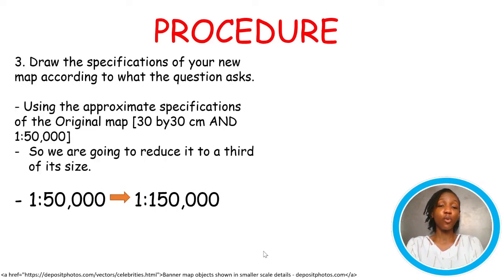So, continuing with the procedure for map reduction and enlargements. After we draw the specifications of our new map according to what the question asks, remembering the previous readings we got, 30 by 30 centimeters and 1 ratio 50,000. So, if we're asked to reduce it to a third of its size, as previously done before, we are going to get a scale of 1 ratio 150,000. So, after reducing the scale, don't forget that we have to reduce the map itself. So, we are going to divide 30 by 3 or multiply 30 by 1 over 3. At the end of day, we're still going to get the same answer, 10 centimeters.